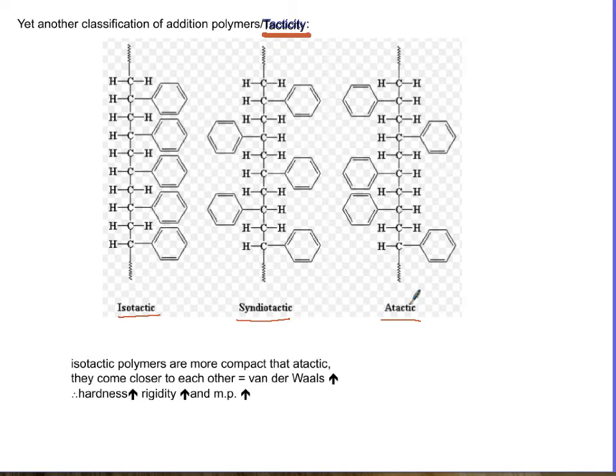Now the properties change because of this. In isotactic, you are going to pack nicely next to each other and then you will have higher van der Waals forces. Therefore you are more rigid, your melting point goes up, and you have semi-crystalline or crystalline nature.